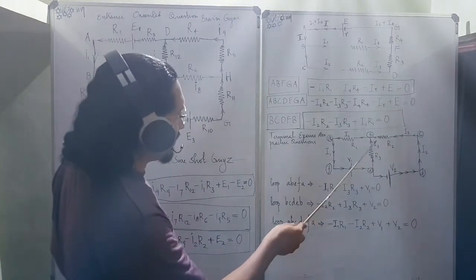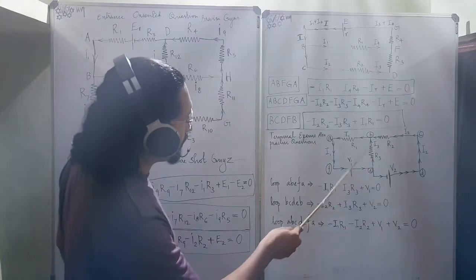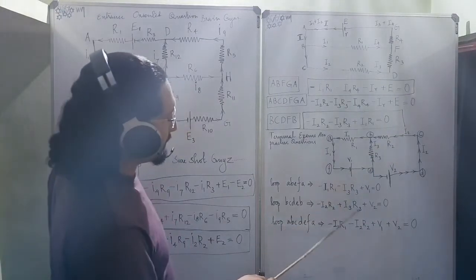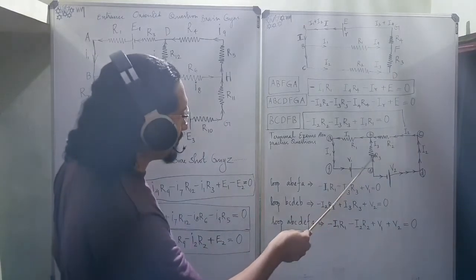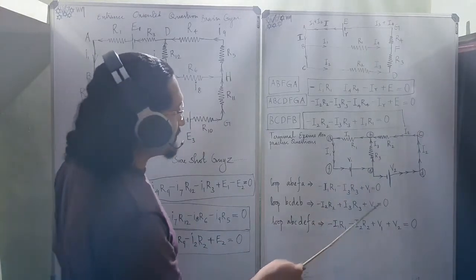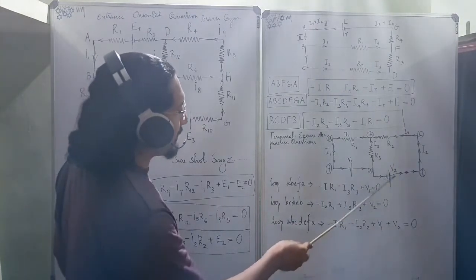Minus I2*R2. R2 is there. But against this R3 comes. So, minus I2*R2 plus I3*R3. This thing, I3*R3. Against this minus I2*R2 comes plus I3*R3 plus the same voltage from the cell is equal to 0.